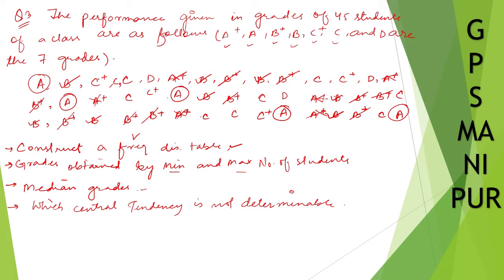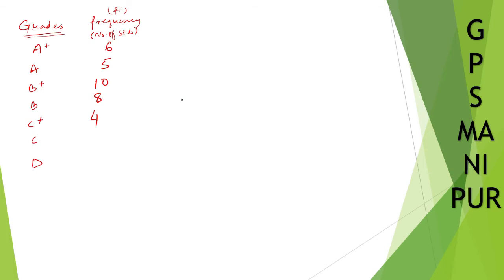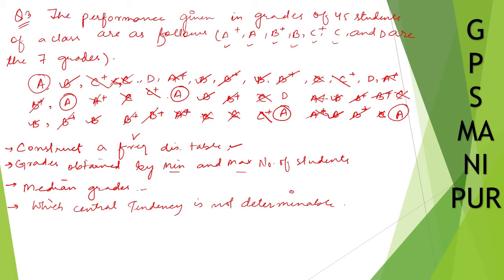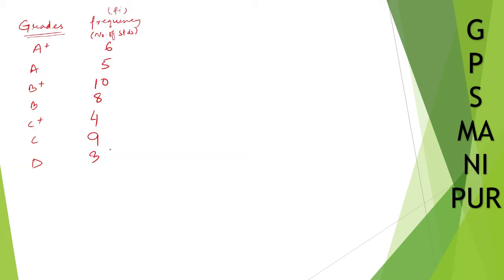How many students got C+? One, two, three, four — so only four students got C+. How many students got C? One, two, three, four, five, six, seven, eight, nine — nine students got C. How many students got D? One, two, three — only three students. So write down three.